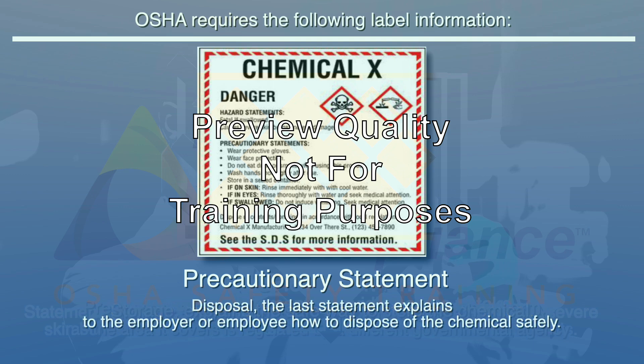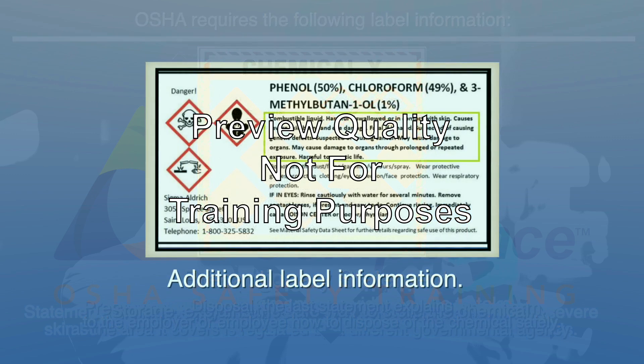The disposal statement explains to the employer or employee how to dispose of the chemical safely. An example is "dispose of contents in accordance with local, regional, national, and international regulations." Sometimes manufacturers, importers, or distributors may choose to add supplementary information to the label when it provides further details and does not contradict or cast doubt on the validity of the standardized hazard information.